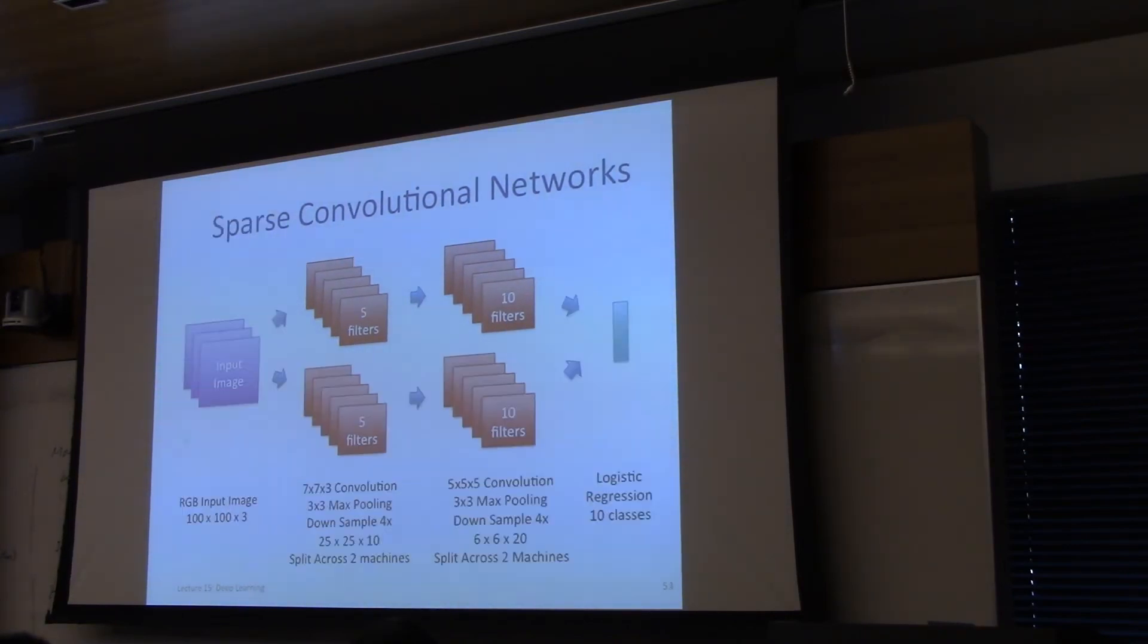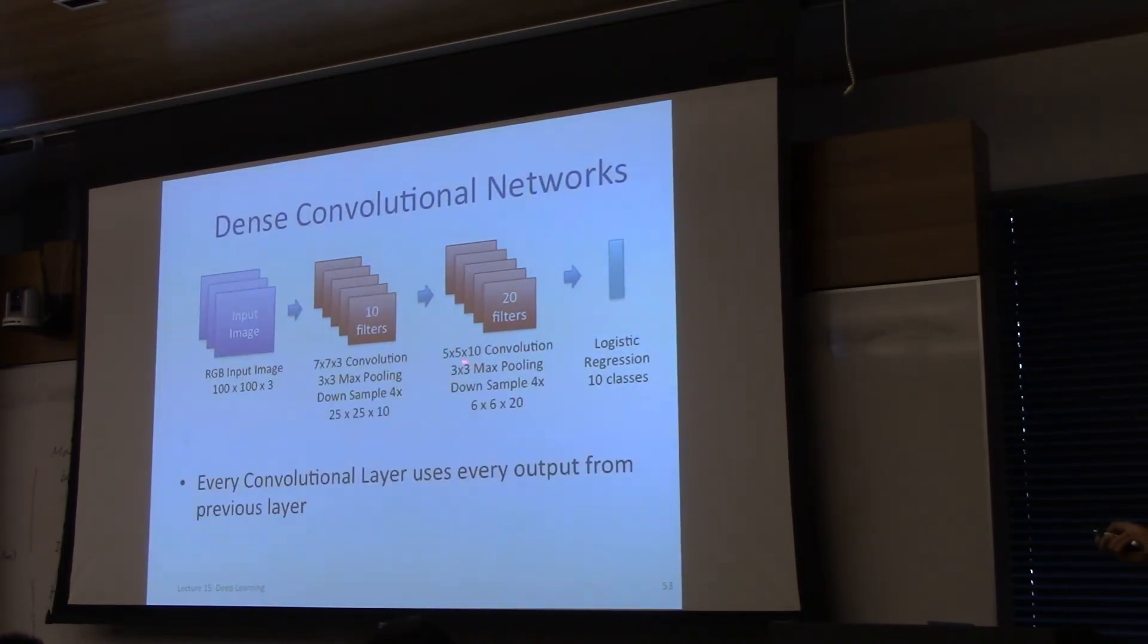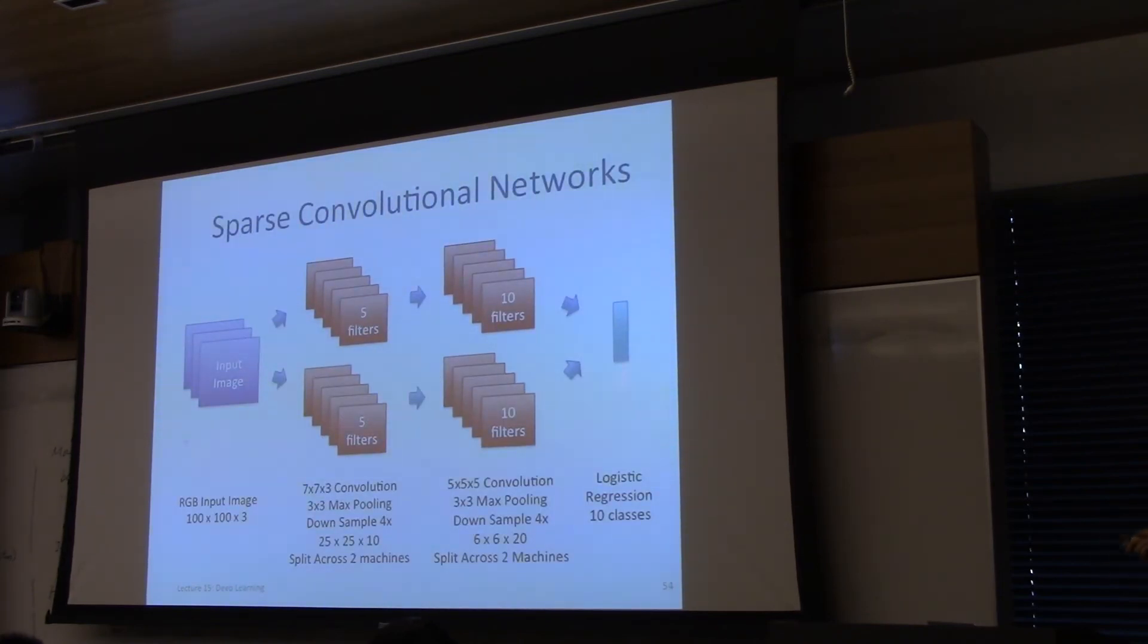You don't actually have to train dense convolutional networks. So for example, here, every layer, every neuron in this layer takes as input every neuron in this layer. You don't have to do that. You don't have to have the neuron be a 10-channel convolution. You could have it instead of five. You could split it. And this can speed up training because now there's fewer parameters. And furthermore, you can split it across two machines. You can now parallelize this.